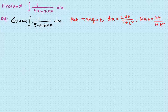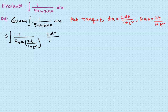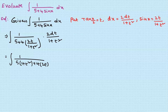Applying the substitution to the standard form: integral of 1 by (5 + 4·sin x) becomes 1 by [5 + 4·(2t/(1+t²))], multiplied by 2dt/(1+t²). This gives the expression: 1 by [5·(1+t²) + 4·2t] all over (1+t²), times 2dt/(1+t²).